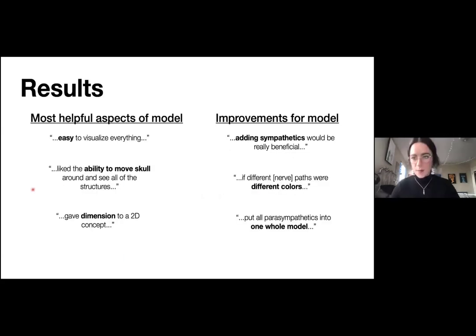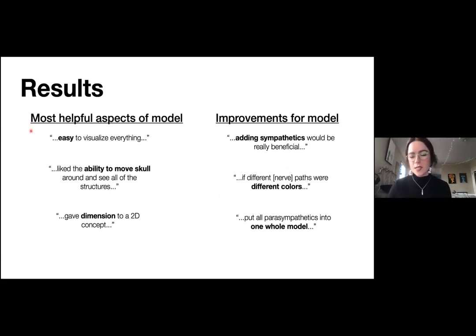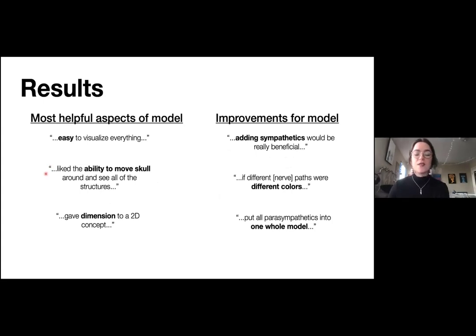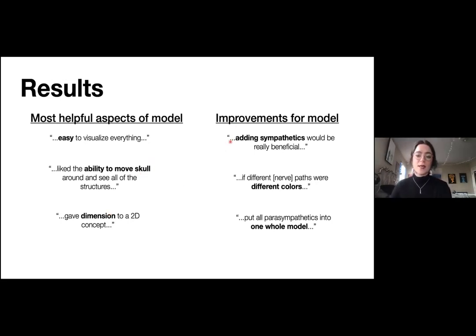For my results, I'll first discuss some feedback I received on my models. Students said the most helpful aspects included that it was easy to visualize everything, they really liked the ability to move the skull around and see all the structures, and it gave dimension to a previous 2D concept. Some suggested improvements included adding sympathetics to see the juxtaposition between parasympathetics and sympathetics, using different colors for different nerve paths, and combining all parasympathetics into one complete model.